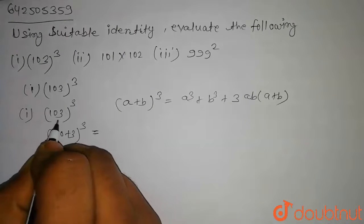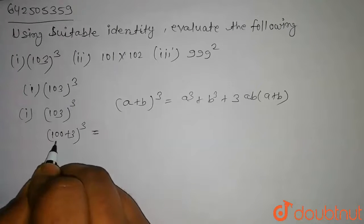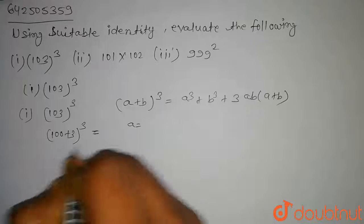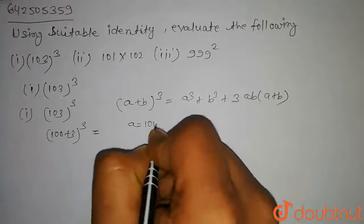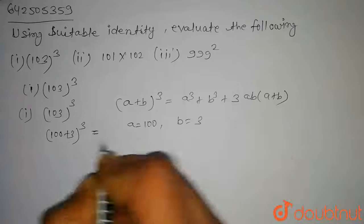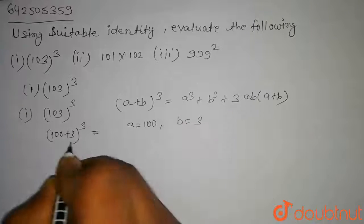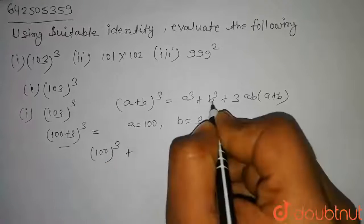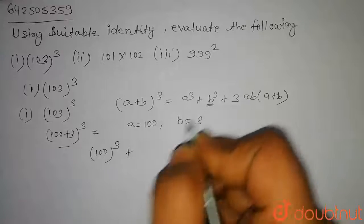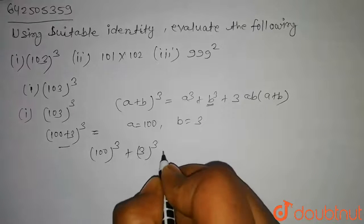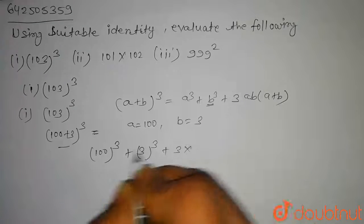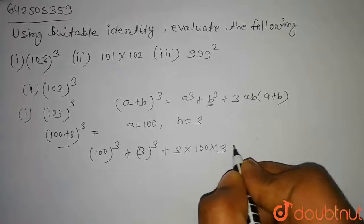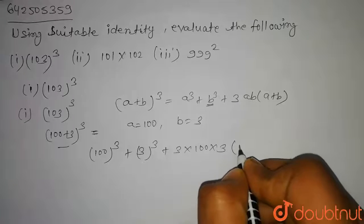We can write 103³ as (100 + 3)³. So here a = 100 and b = 3. On using this identity, we can write this as 100³ + 3³ + 3 × 100 × 3 × (100 + 3), that is 103.